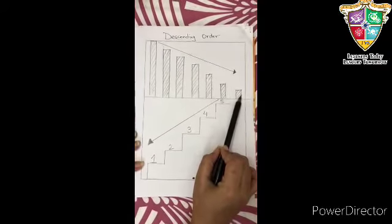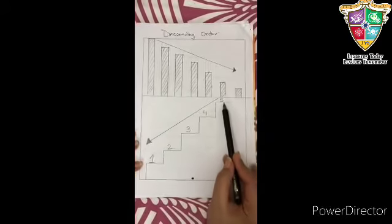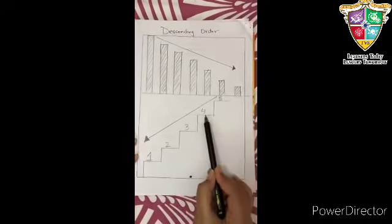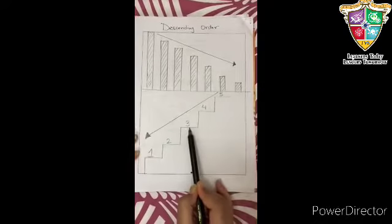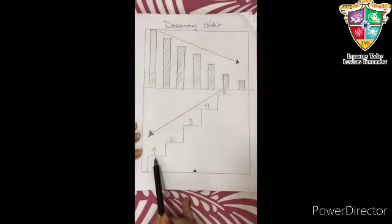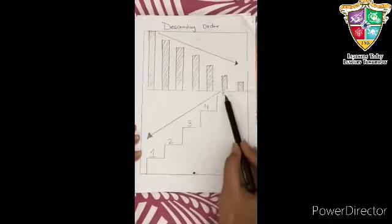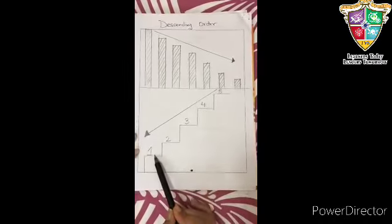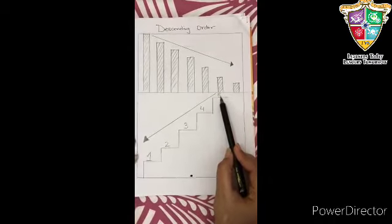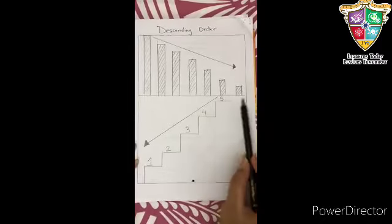In the same way, when we use the staircase, we come down. We're coming down from 5th stair, then to the 4th stair, then to the 3rd stair, then 2nd and then the last one is 1st. This is known as a decreasing order or descending order. What we call it? Decreasing order or descending order.